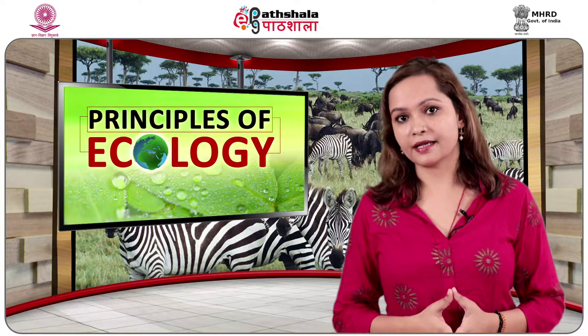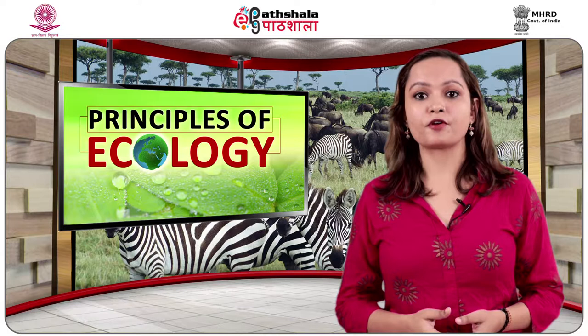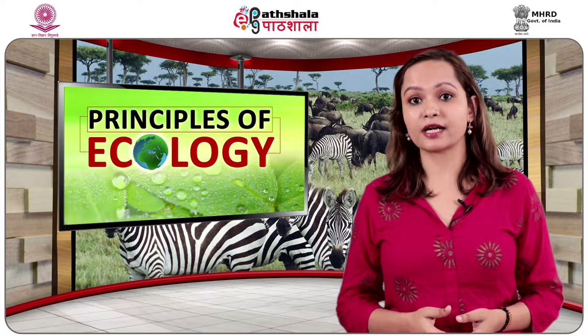Concentration of biogenic salts: concentrations of salts like phosphates and nitrates are limiting factors of freshwater ecosystems. Calcium and some other salts may also be limiting factors in some lakes. The algal productivity of some freshwater lakes is limited by the availability of inorganic forms of phosphorus such as iron phosphate. When lakes are artificially fertilized with phosphorus in the form of phosphates, there is a remarkable increase in productivity. Phosphate received from runoff from agricultural fields and the sewage supplied to lakes also results in enhanced productivity.